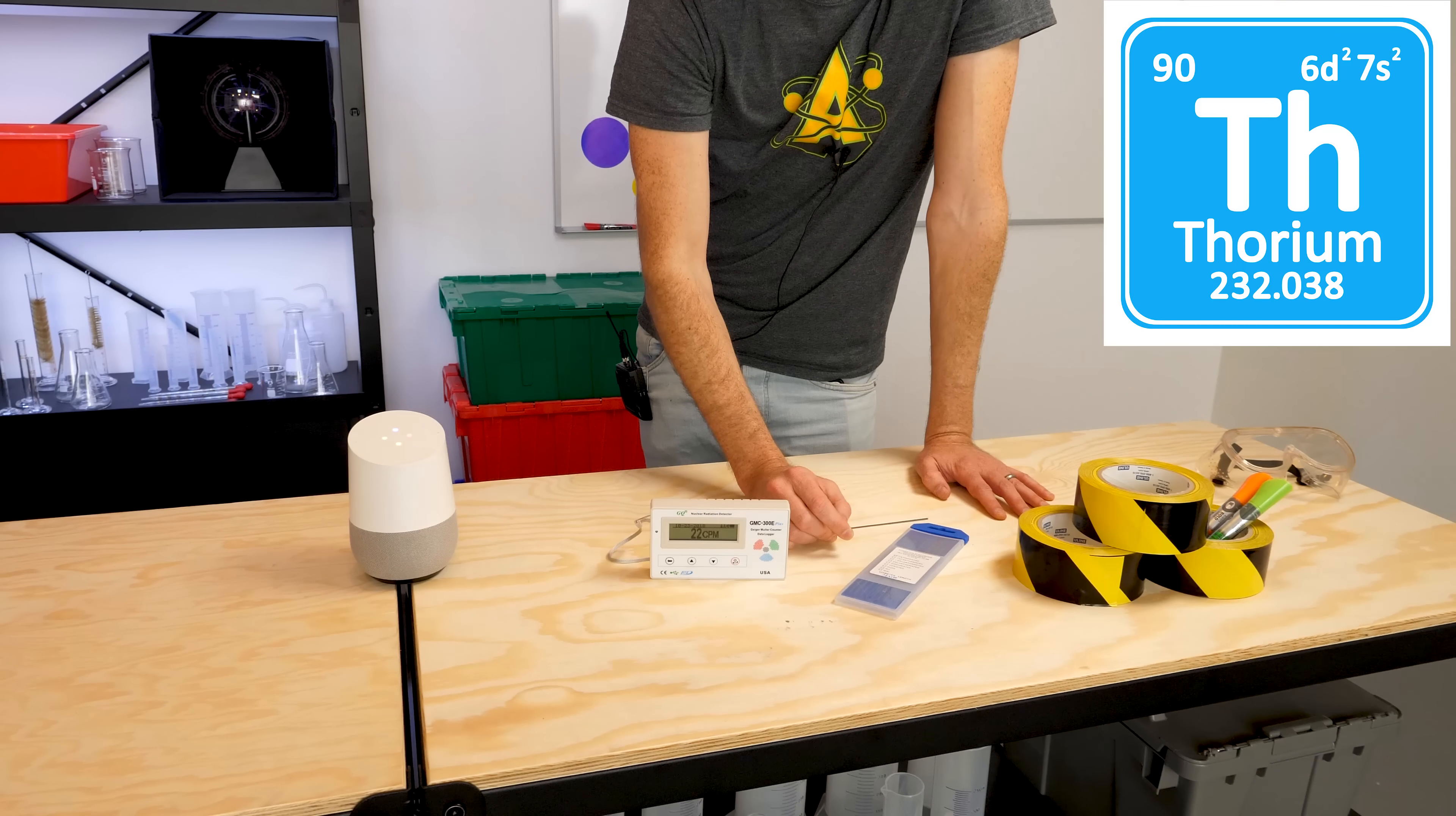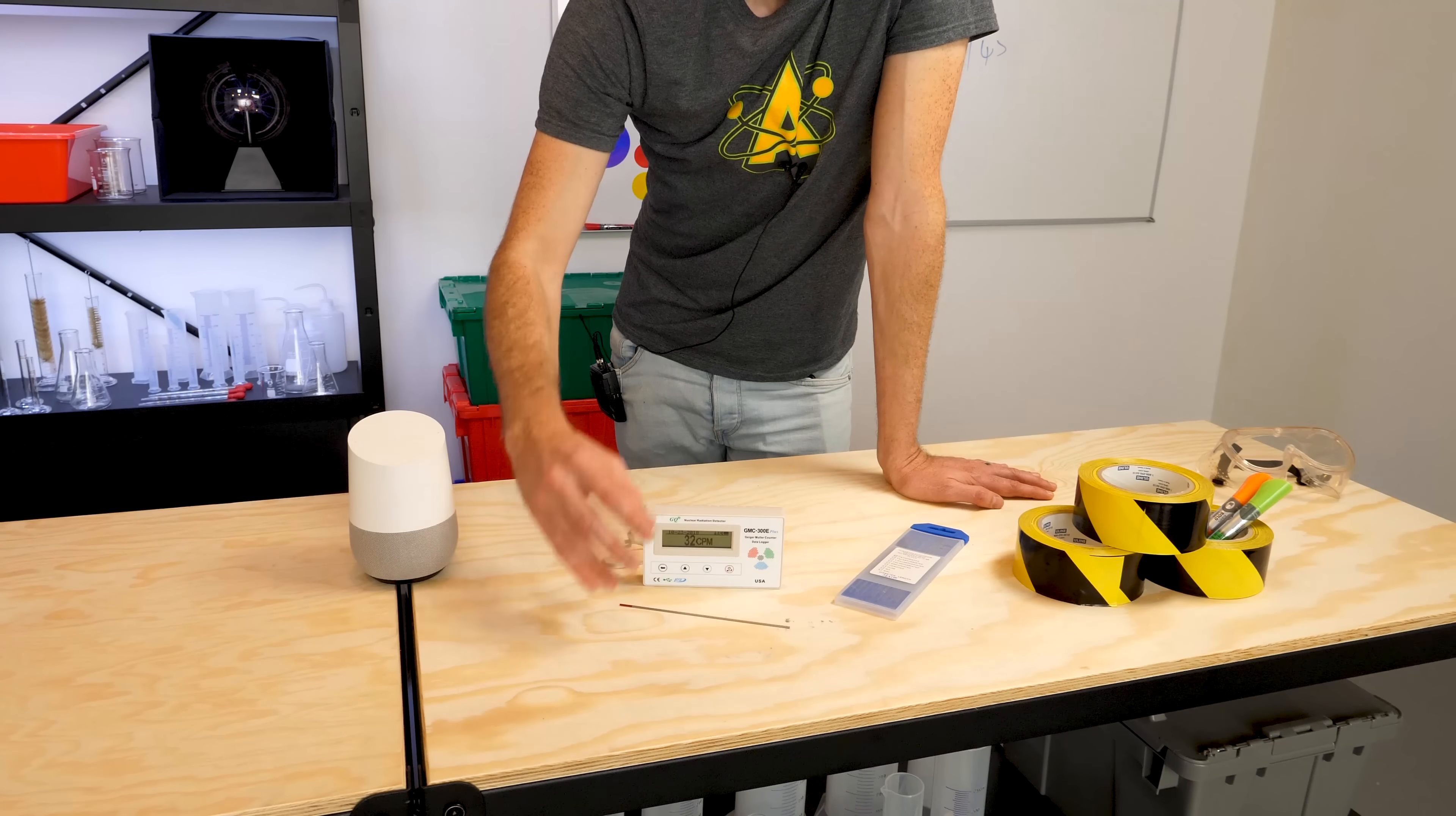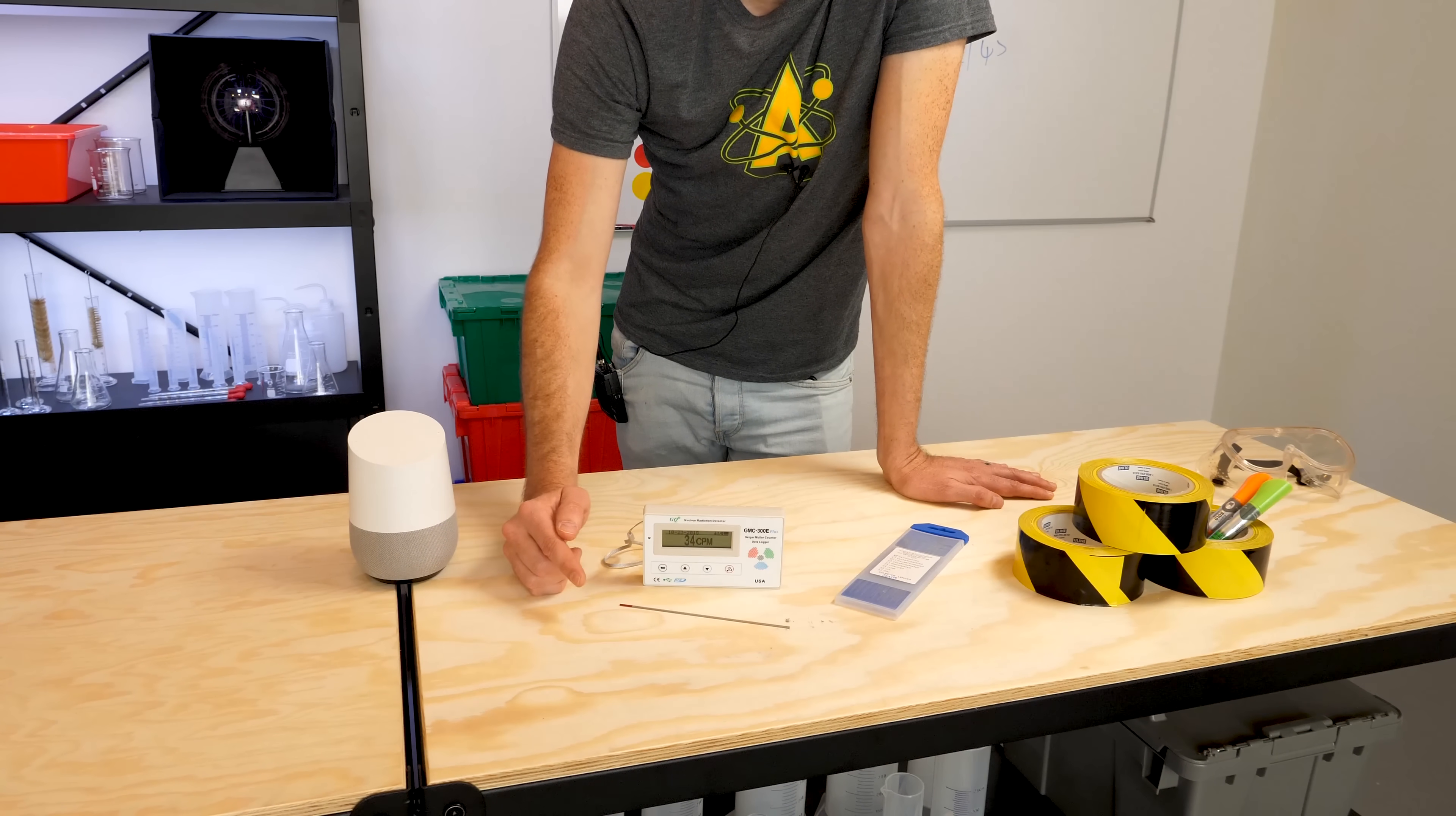The most stable isotope, thorium-232, has a half-life of 14.05 billion years. And so we can predict very well how many atoms will decay over time, but we can never say with exact certainty when that decay will occur.